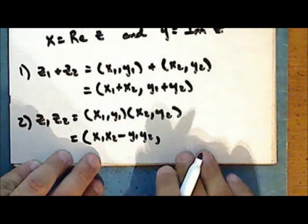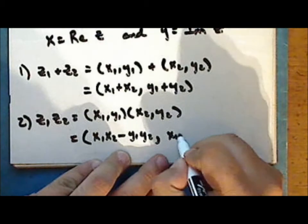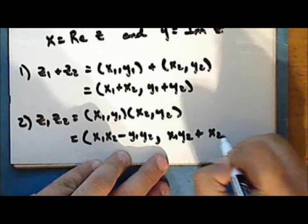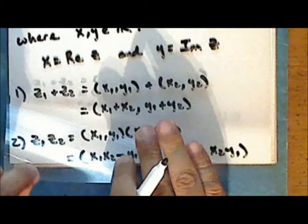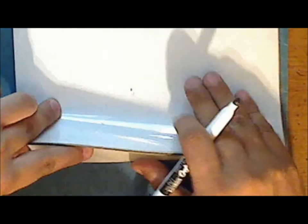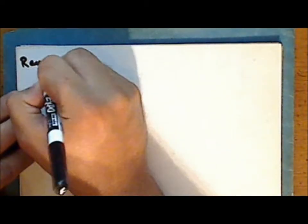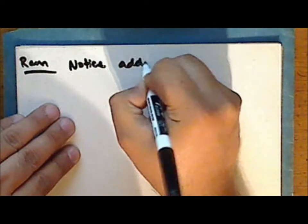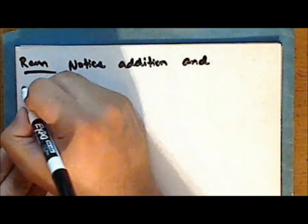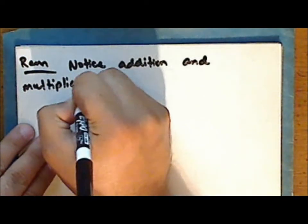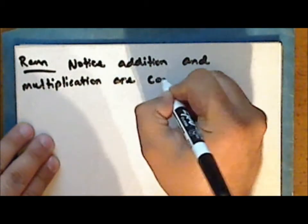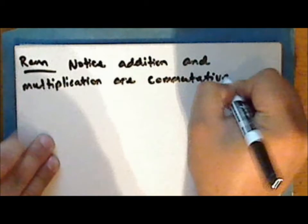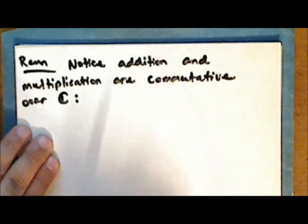Recall from the previous lecture that our model for the complex numbers is a set of numbers that occur in the complex plane, and that the complex plane is viewed as a vector space over the real numbers. That is, if a number z is a complex number, then z is represented as an ordered pair of numbers x and y, where x and y are real numbers. We call x the real part and y the imaginary part of the complex number z.